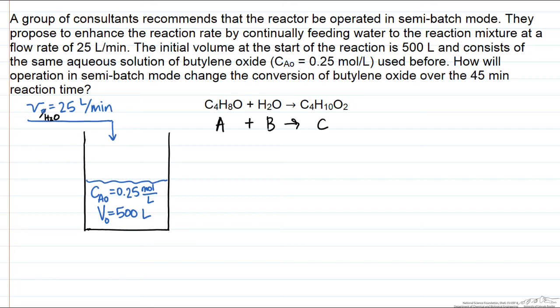The reaction rate with which we're producing C is equal to a reaction rate constant times the concentration of A times the concentration of B. But the concentration of B in this problem was fixed at 56 moles per liter. And since it's already in great excess, adding more of it as the reaction proceeds isn't really going to change the concentration, because it's already essentially as concentrated as it's going to get. So this variable, CB0, is not going to change.